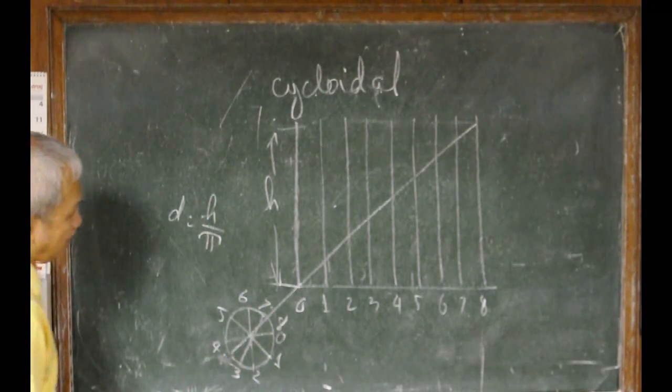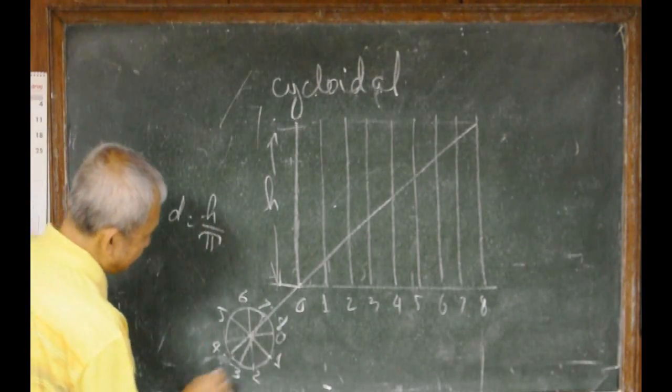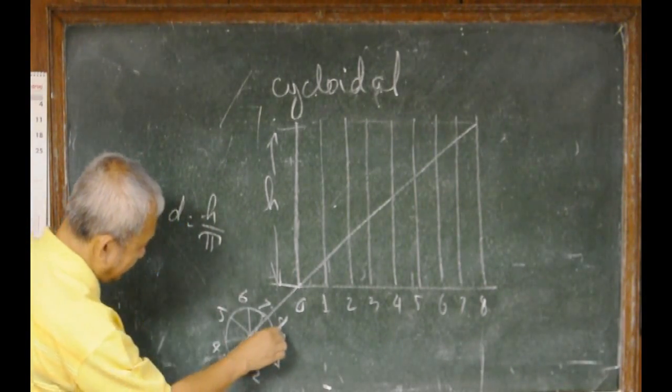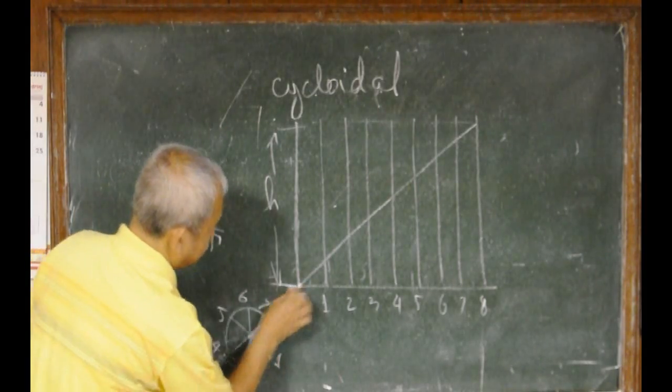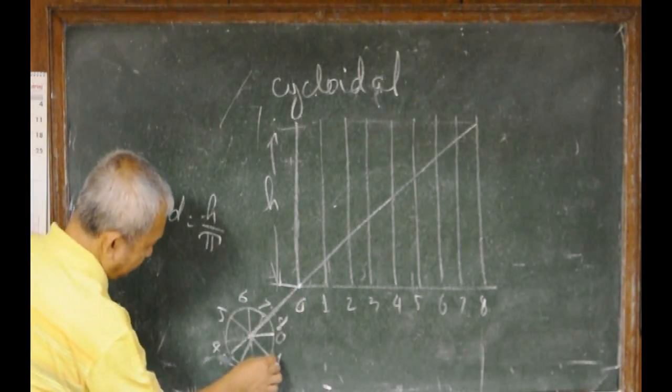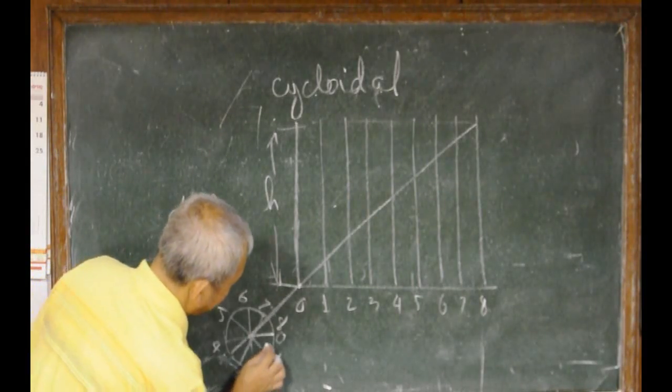And now, to make the construction of the curve, we will start with 0, project it to the center, and then project it to that point here. From 1, we have to project it to the vertical line, and then project it again to here.